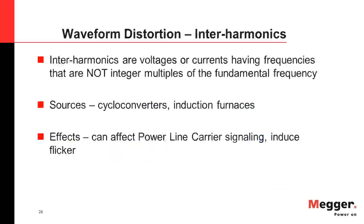Interharmonics are voltages or currents having frequencies that are not integer multiples of the fundamental frequency — for example, 210 Hz or 330 Hz in a 60 Hz system. Interharmonics arise from any process involving frequency conversion, such as cycloconverters, static frequency converters, induction furnaces, and arcing devices. Effects include interference with PLC signaling — since PLC signals are high-frequency low-voltage signals transmitted over power lines to remotely control appliances — and interharmonics can also induce flicker in CRT devices.